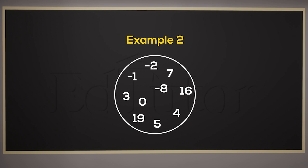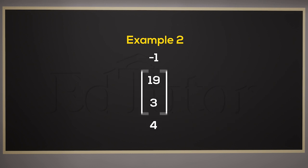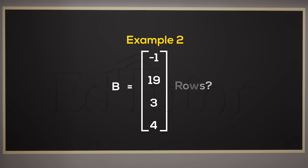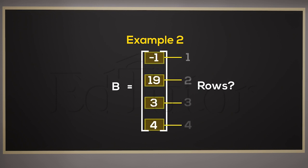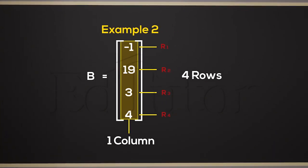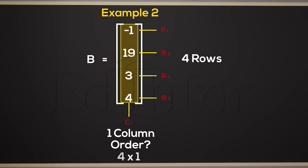Let's check out another example to get a better grip on all these concepts. This time, let's shake things up a bit and arrange four more random numbers vertically. Enclose it in brackets and label it with a capital letter like V. Since there are four horizontal lines of entries, there are four rows, and since there's only one vertical line, there's only one column. From top to bottom, we can label these rows as R1, R2, R3, and R4, whereas this column can be labeled as C1. The order is 4 by 1, since we have four rows and one column in matrix V.